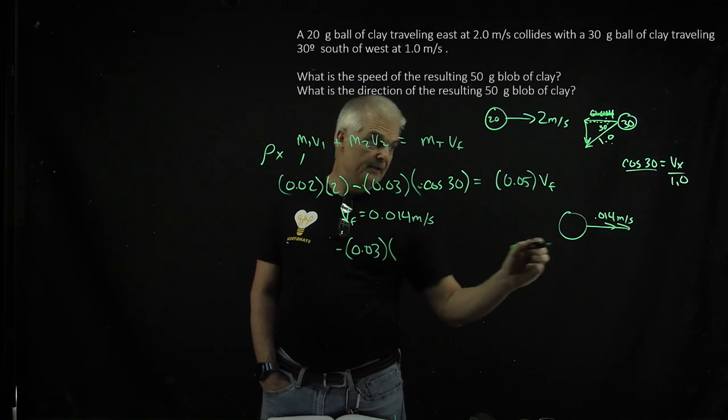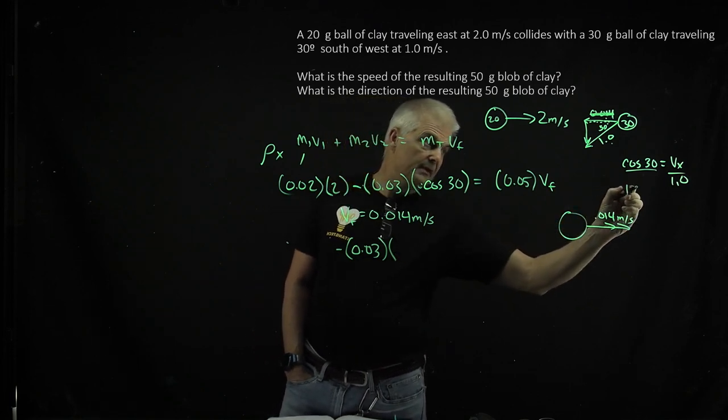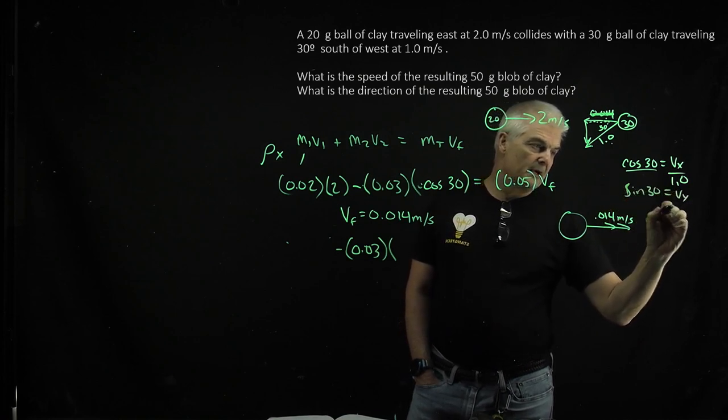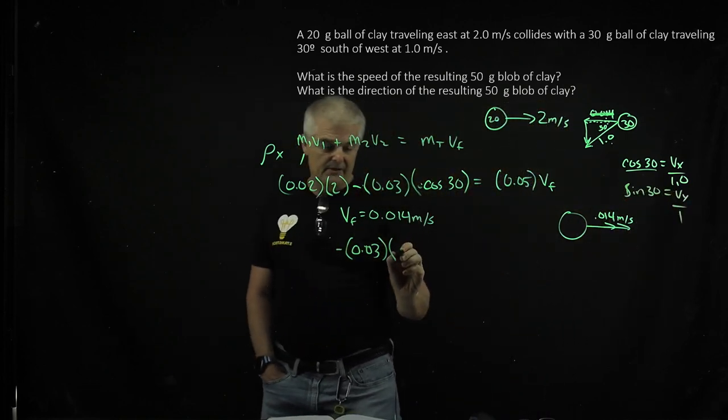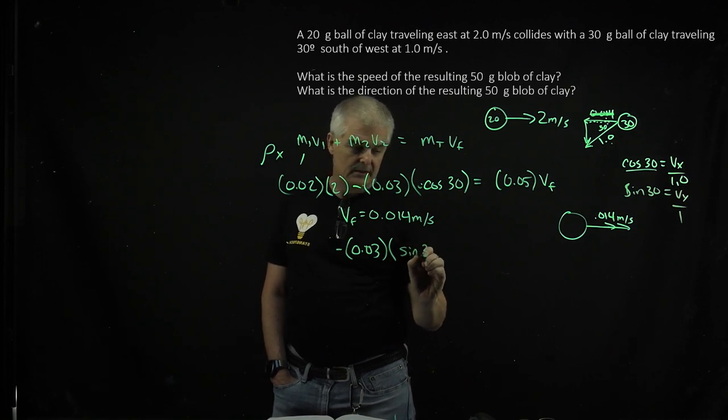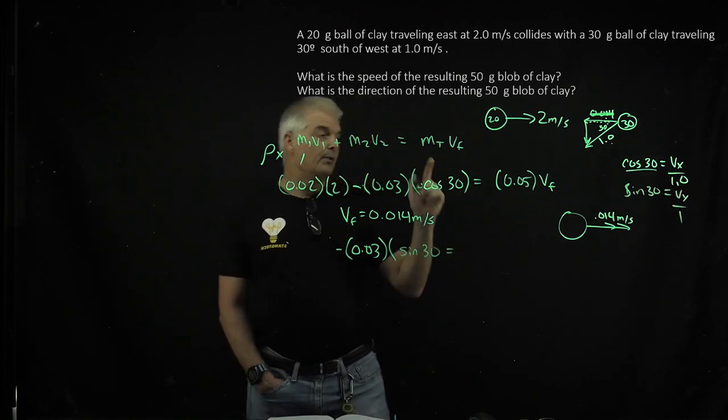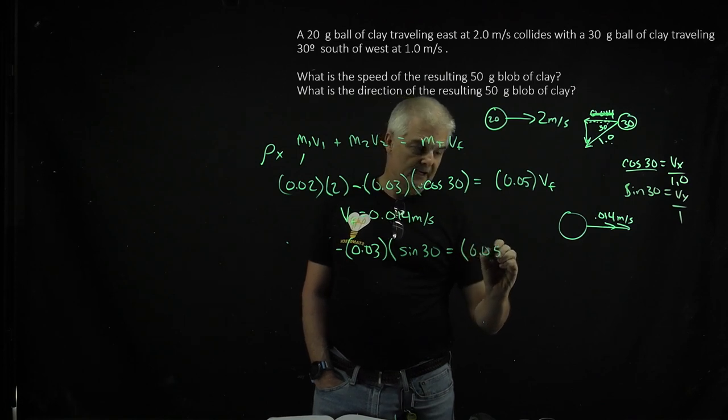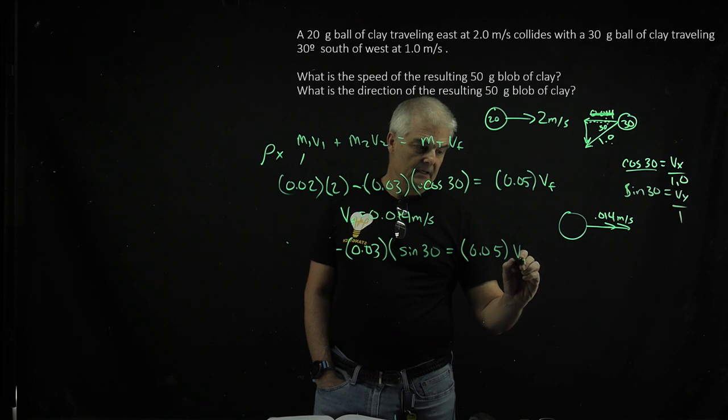Times sine 30°. So 1 × sine 30° = Vᵧ / 1, so it'll just be sine 30, which equals the total mass, 0.05, times V_final.